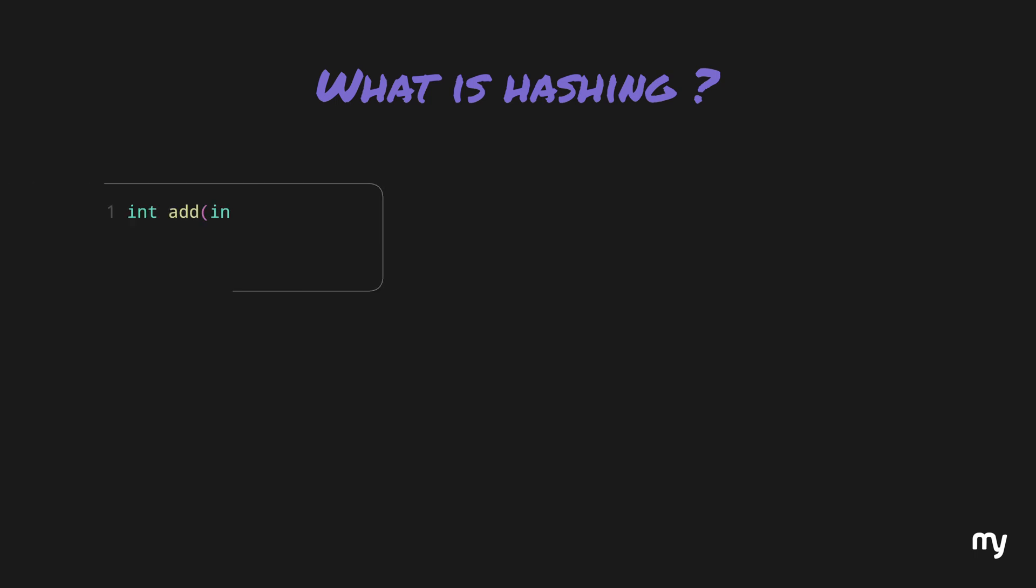Let's take an example of a function which takes two numbers and returns its sum. Here, the output is always dependent on the input. If we change the input, the output always changes.